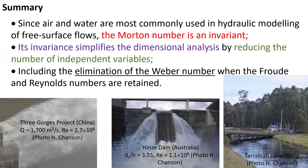In summary, since air and water are most commonly used in hydraulic modelling of free surface flow and open-channel flow, the Morton number is an invariant. This invariance simplifies the dimensional analysis by reducing the number of independent variables, including the elimination of the Weber number when the Froude and Reynolds numbers are retained.